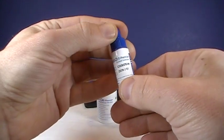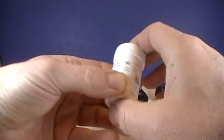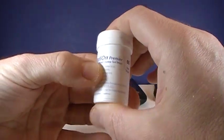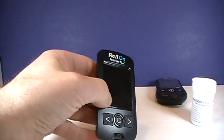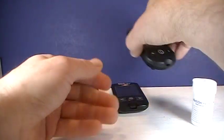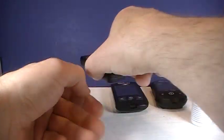This is the control solution for a line of meters sold by Walmart. They use the RelyOn Premier test strips. The three meters are the RelyOn Blue, the RelyOn Boyce, and then the RelyOn Compact.